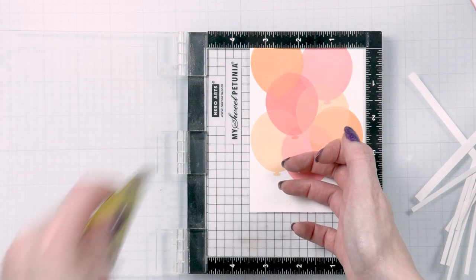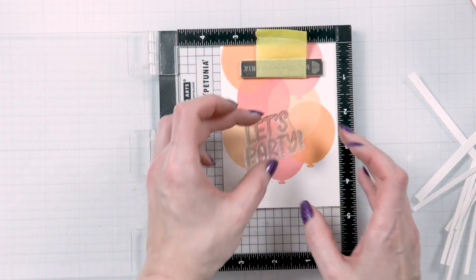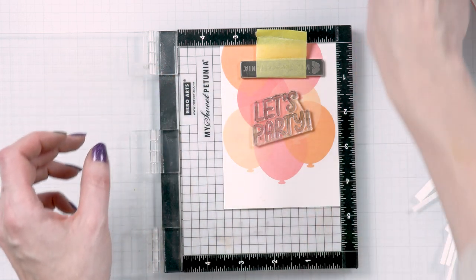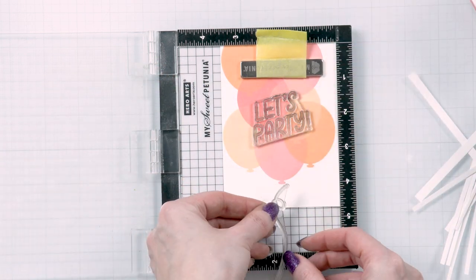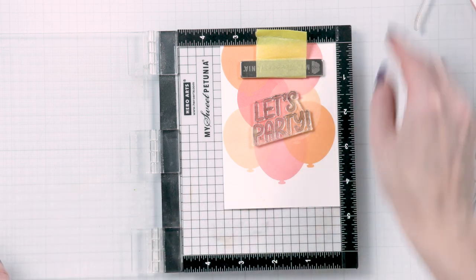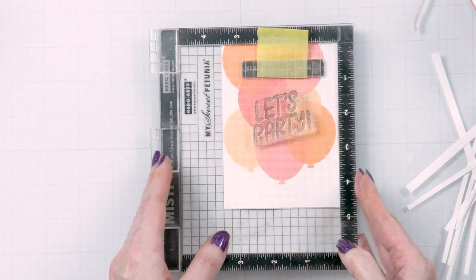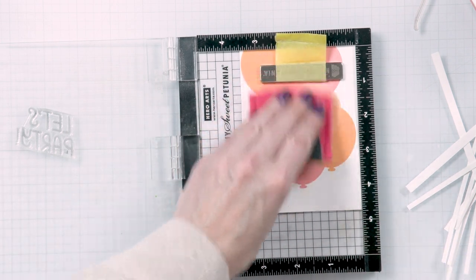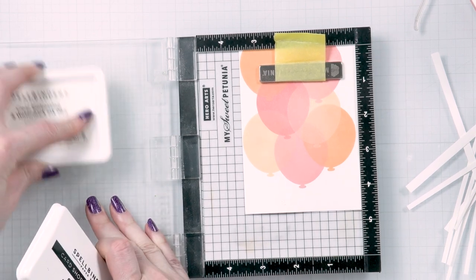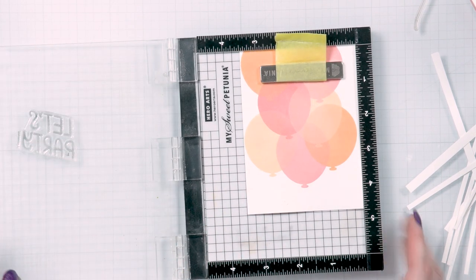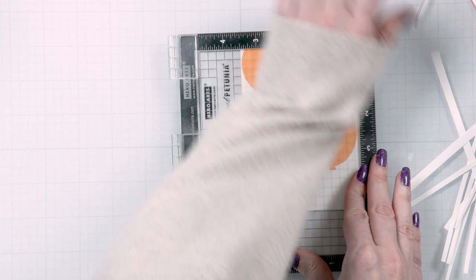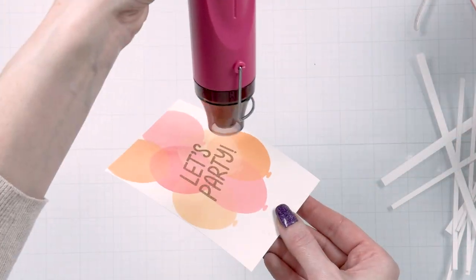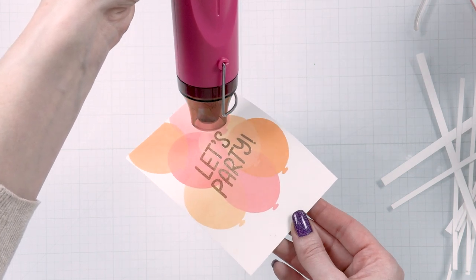Next I went back to my Minimisti stamping tool and I used it to stamp the sentiment. Now since these smaller balloons are obviously smaller, the sentiment doesn't fit inside any particular balloon. So I just have the sentiment in the center of the panel spanning across the balloons. I treated my panel with an anti-static powder tool. I inked up the stamp with clear embossing ink and I stamped it onto my panel. Next I added the Simon Says Stamp Antique Gold Embossing Powder and I heat set it using my heat tool to melt it.